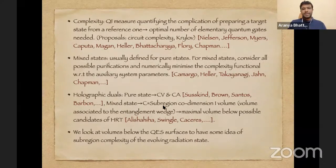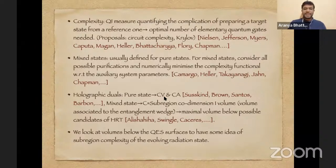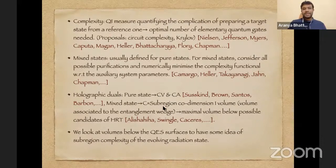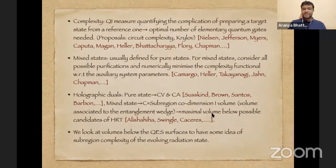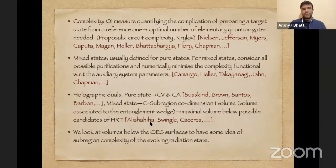The holographic duals of complexity have been proposed by Susskind, Brown, and many other authors. The idea is to compute the maximal volume bulk slice or the action of the Wheeler–DeWitt patch to get the complexity of a pure state. For mixed states, one computes the subregion co-dimension-one volume associated to the entanglement wedge of the subsystem, and for a time-dependent situation must find the maximum volume over all possible HRT surface candidates.